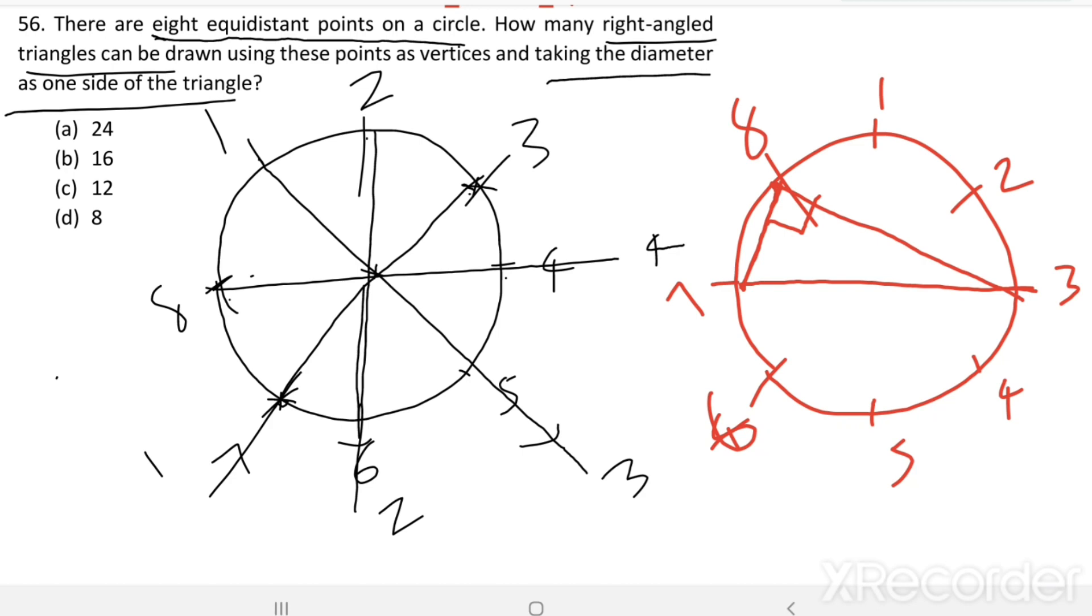So, this is a right-angled triangle. If I am joining 7, 2, 3, this is a right-angled triangle. 7, 1, 3 is another right-angled triangle.